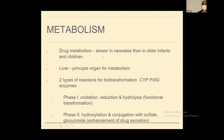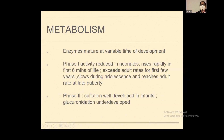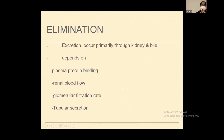For metabolism, drug metabolism is lower in neonates than in older infants and children. The liver is the principal organ system. Biotransformation uses the cytochrome P450 enzyme system: phase one includes oxidation, reduction, and hydrolysis; phase two enhances drug excretion by conjugation with sulfate or glucuronide. These systems mature at variable times in development. Phase one activity is reduced in neonates, rises in the first six months, and exceeds adult levels in the first few years, then slows during adolescence and reaches adult rate only at late puberty. Phase two: sulfation is well developed in infants, but glucuronidation is underdeveloped.